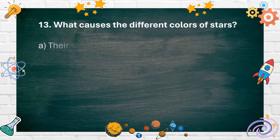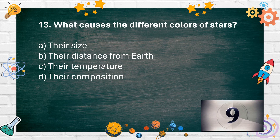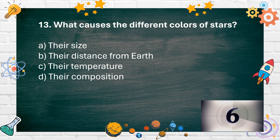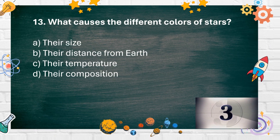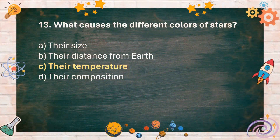What causes the different colors of stars? A. Their size, B. Their distance from Earth, C. Their temperature, D. Their composition. The answer is C. Their temperature.